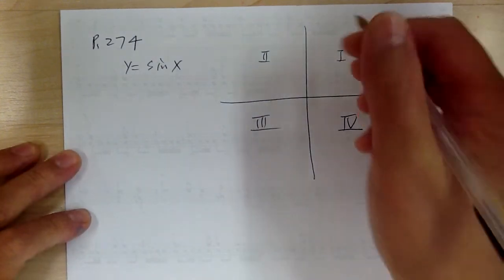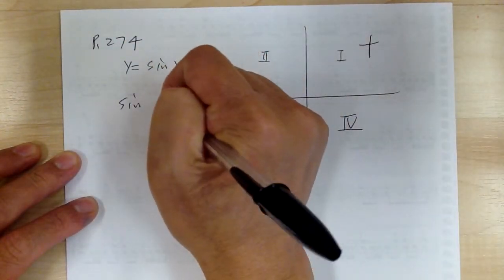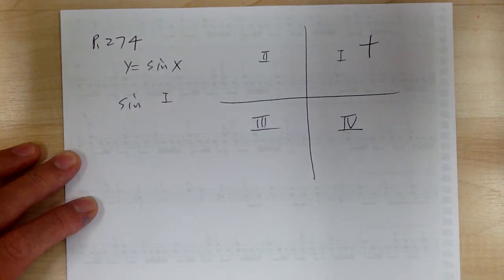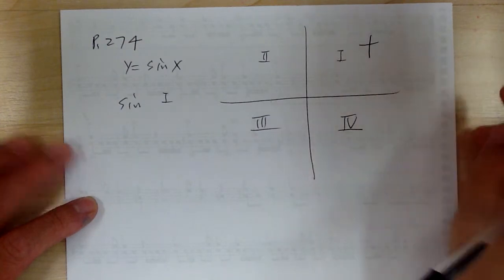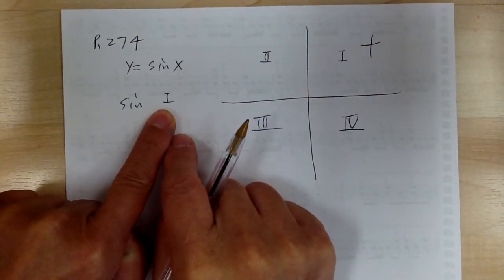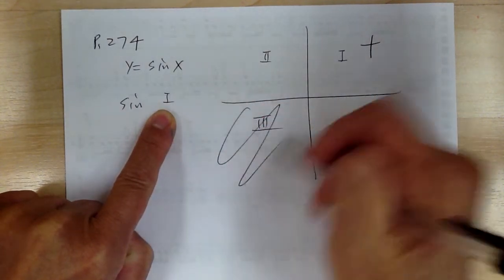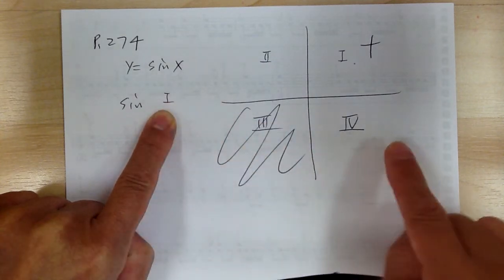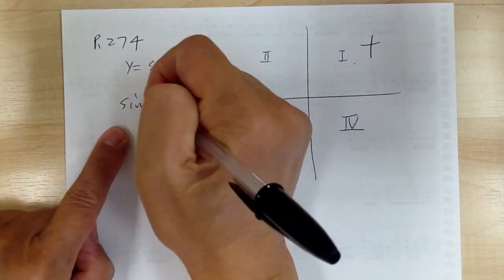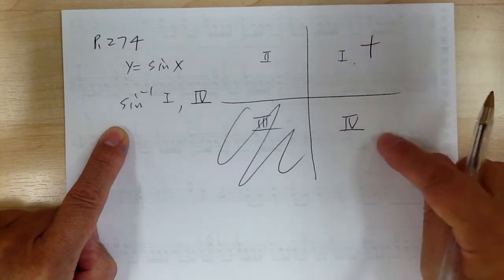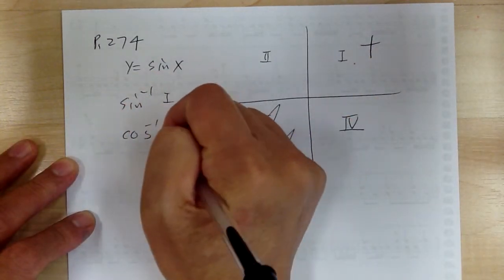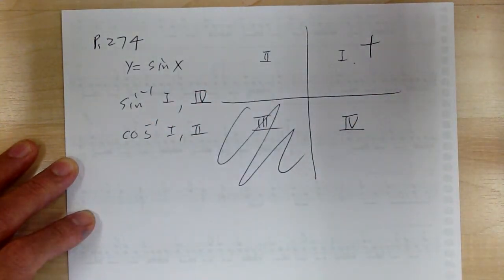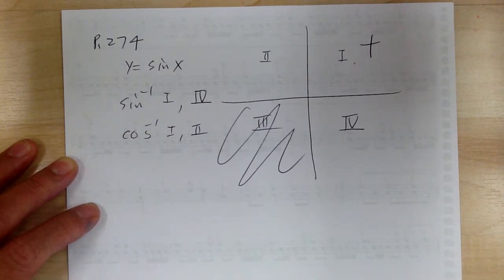For the sine function, you use quadrant one because it's positive — every inverse function uses quadrant one. Then you have to think about which quadrant gives you the negative. You'll never use quadrant three. For inverse sine, to get a negative value, you use quadrant four. So inverse sine uses quadrants one and four — quadrant one gives positive, quadrant four gives negative. For inverse cosine, it uses quadrants one and two — quadrant one gives positive, quadrant two gives negative.